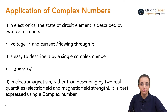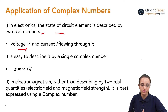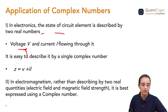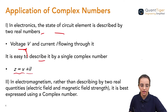When we use complex numbers in the electronic field or in electromagnetism, in any circuit we have voltage, current, resistors, and different electronic components. The voltage is denoted by v and the current flowing through the circuit is denoted by i. Instead of describing them separately, it is useful to describe them using a complex number: z = v + i·i, where z is the complex number, v is the real part, and i is the imaginary part.